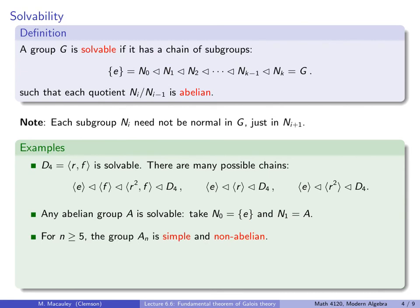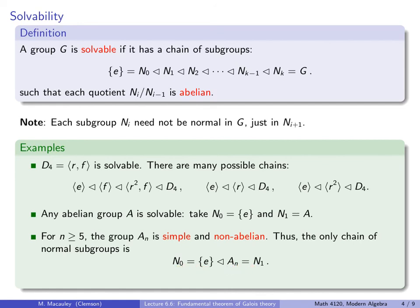If N is at least 5, then the group A_N is simple — meaning it has no normal subgroups other than the trivial subgroup and the entire group — and A_N is not abelian. Thus the only chain of normal subgroups begins with the trivial group and ends one step later with A_N. Since the quotient of these groups is isomorphic to A_N, which is non-abelian, A_N is not solvable if N ≥ 5.